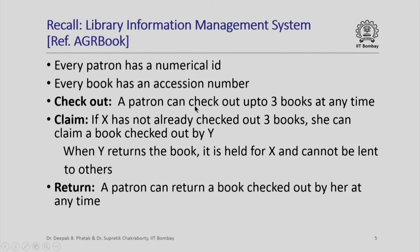Now recall from the previous lectures that we were trying to design a library information management system motivated by discussions in the AGR book. In our library information management system, every patron would have a unique numerical ID, every book would have a unique accession number, and we are going to allow three different operations: checkout, claim, and return. A patron can checkout up to three books at any time, and we have seen how to implement this functionality in C++ in the last lecture.